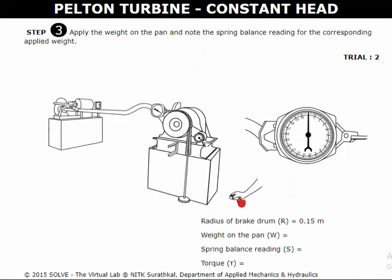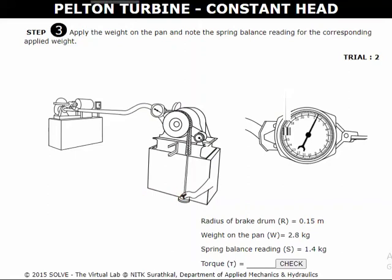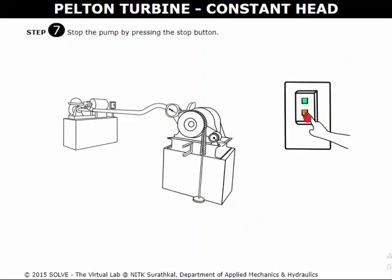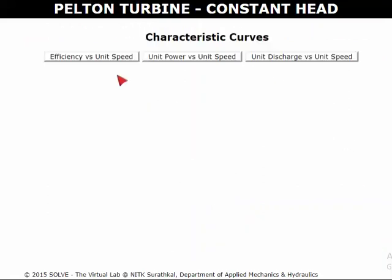Click here to add the weight. Repeat the same process after adding different weights for further trials. Click on the red button to stop the pump. Click on the label to get the characteristic curves.